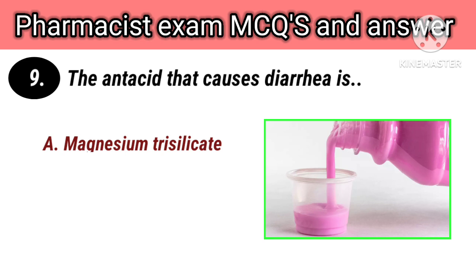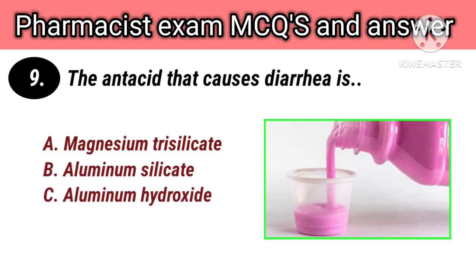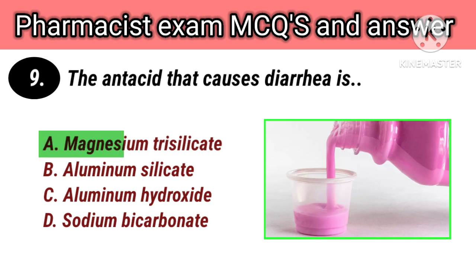The antacid that causes diarrhea is options: A. Magnesium trisilicate, B. Aluminium silicate, C. Aluminium hydroxide, D. Sodium bicarbonate. Right answer is A. Magnesium trisilicate.